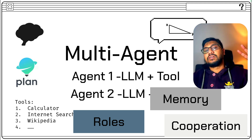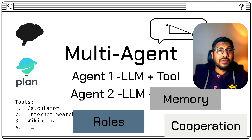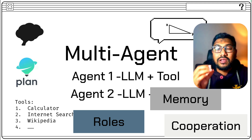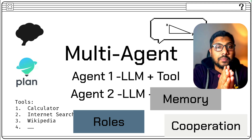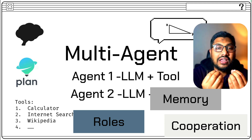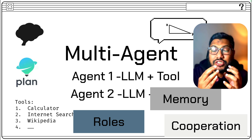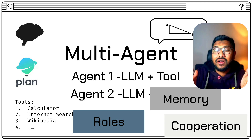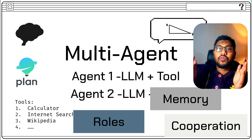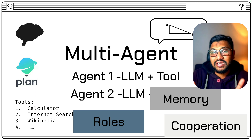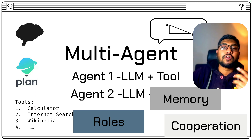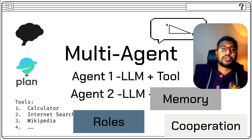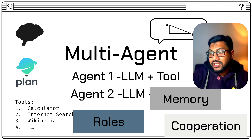So far we have seen two characteristics: one is memory, the second is planning capability. The third is that the agent should have a very clearly defined role. What is the objective of the agent? Why does it exist? What is its purpose? This should be very clearly defined. For example, if I have an internet search agent, I should give a clear goal and role for the agent to accomplish whenever a task is assigned. Similarly, a Python REPL agent should have a clear definition of why it exists and what kind of goal it has.